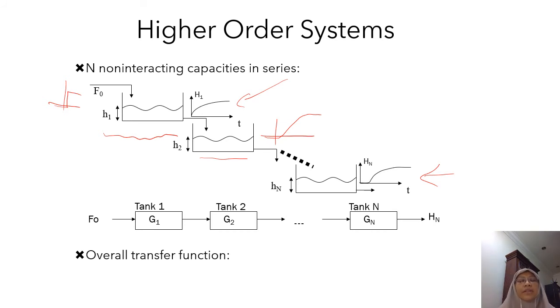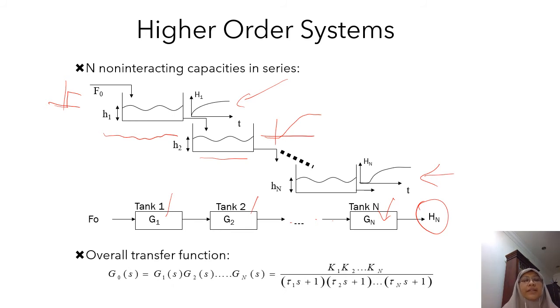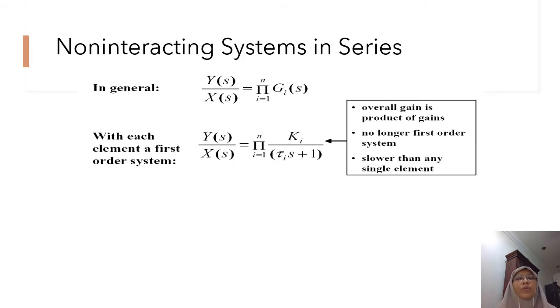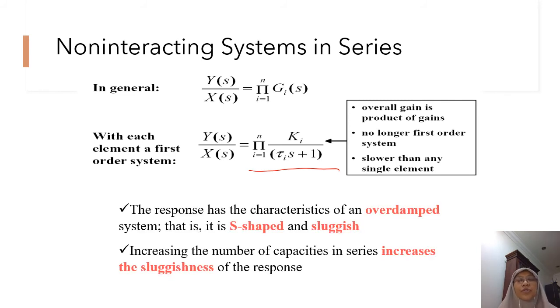Now, we can be representing this by having tanks in series. Tank 1, tank 2 and so on until tank N. So, if you want the overall transfer function of HN over FO, it is simply a multiplication of all the transfer functions in series. Now, if we look at non-interacting systems in series, the general equation, therefore, is just the multiplication of the first order systems. You have actually seen this in the Distillation Column model, right? So, this is the characteristics of non-interacting systems in series. Those towards the end will be more S-shaped and sluggish. And with increasing capacities, the more sluggish it becomes.